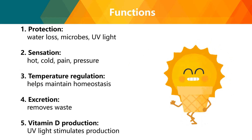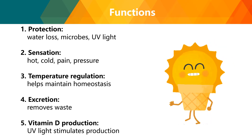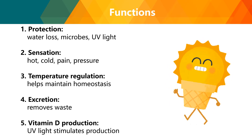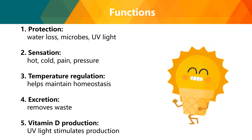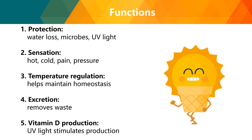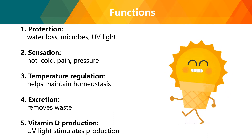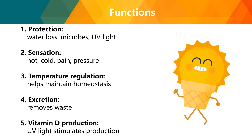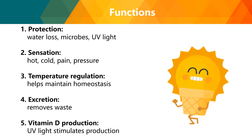For the functions of the integumentary system: first, you have protection. The skin provides protection against abrasion and ultraviolet light. It also prevents water loss and the introduction of microbes within your system. Next, you have sensation — the integumentary system has sensory receptors that can detect heat, cold, pressure, touch, and pain.